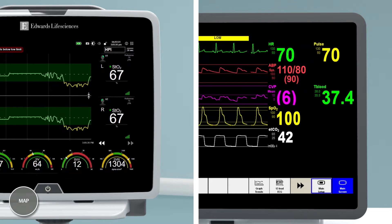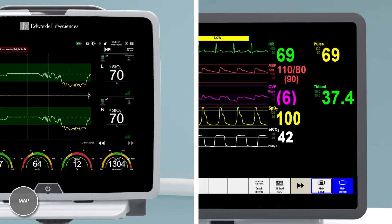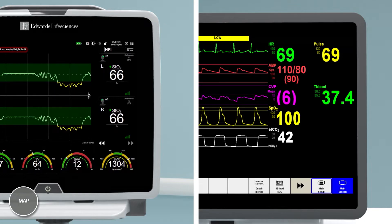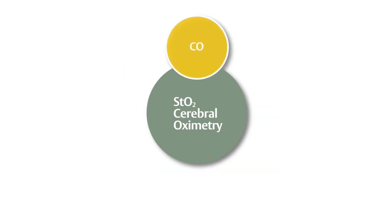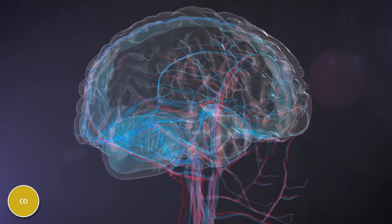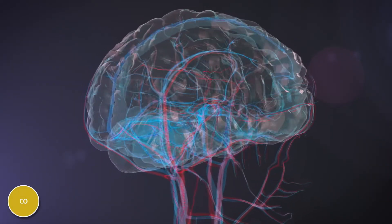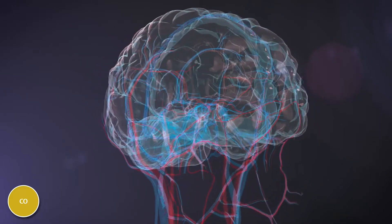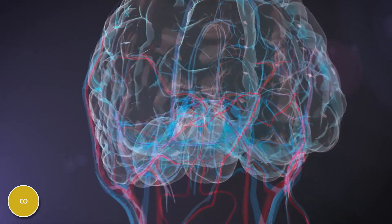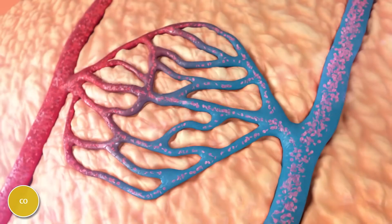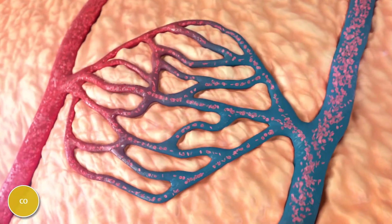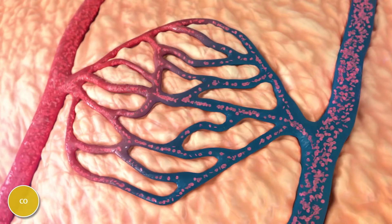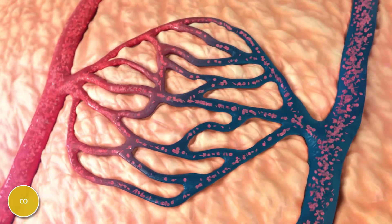Reversing a hypotensive episode can increase blood flow and mitigate this desaturation event. Cardiac Output. In addition to PaCO2 levels and MAP, cardiac output is an important component of cerebral blood flow and oxygen delivery to the brain. An imbalance of cerebral oxygen delivery and consumption caused by changes in cardiac output can be detected by Foresight's NIRS technology.